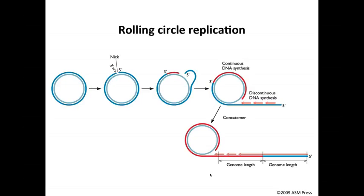The rolling circle mechanism of replication was first discovered in a bacteriophage called PhiX174, which has a double-stranded circular DNA genome. It has subsequently been found in cells infected with bacteriophage lambda, whose genome is much like the herpesvirus genome — a double-stranded linear DNA that is circularized when it gets into the bacterial cell and then replicates by rolling circles. So this mechanism occurs for PhiX174, lambda, and herpesviruses.